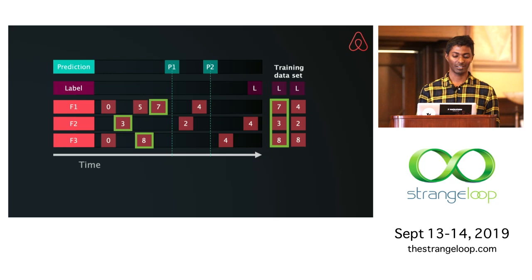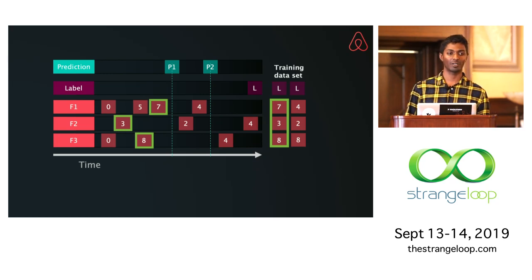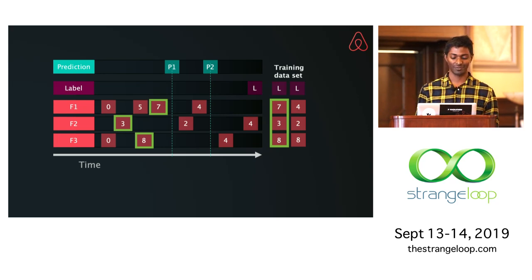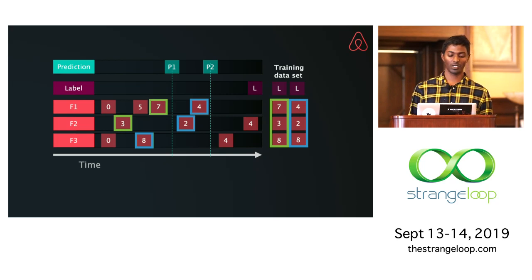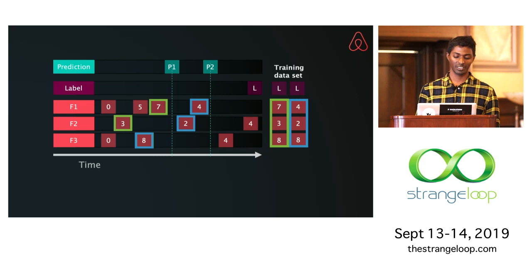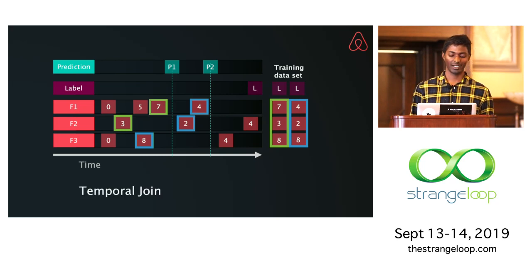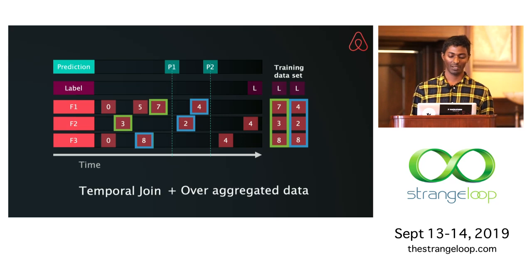If you try to make a prediction at a later point in time — maybe in an hour — where you've thought sufficiently about Indian food and made up your mind, there's going to be a second set of features and a second row of training data. If you look at this problem closely, this is some sort of a join — a time series join specifically — and a time series join over aggregating data, which is the feature definitions we saw before.